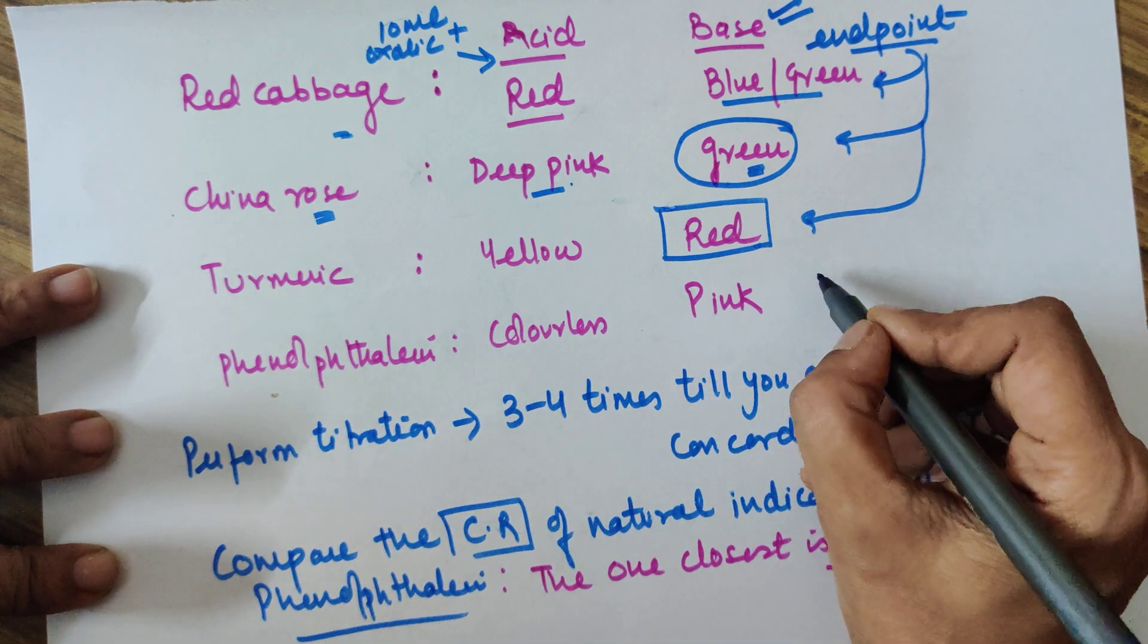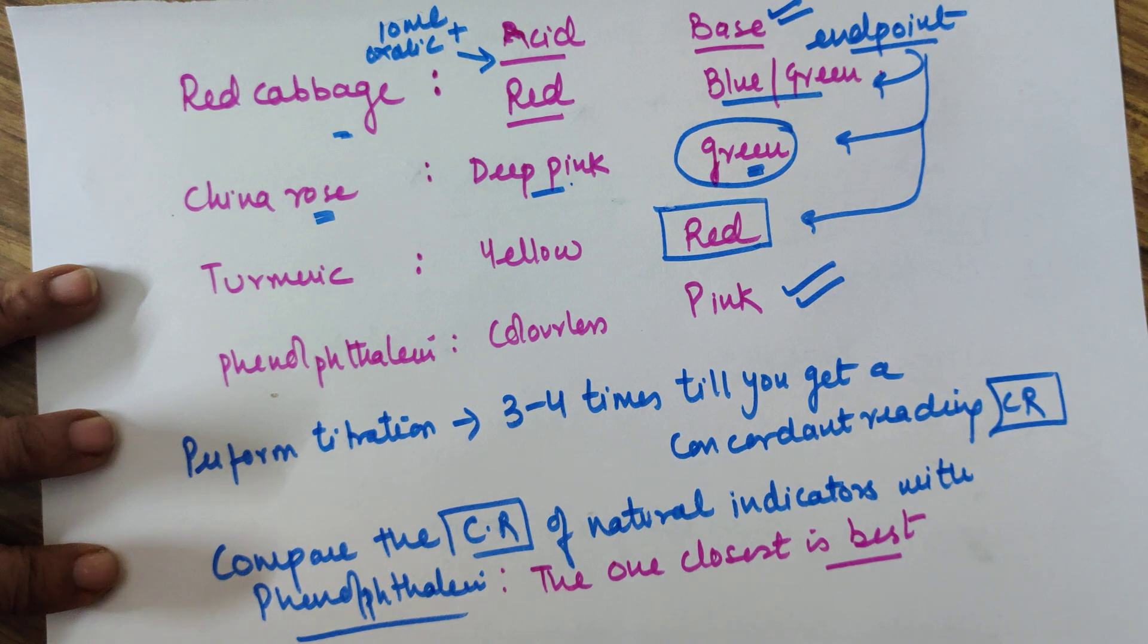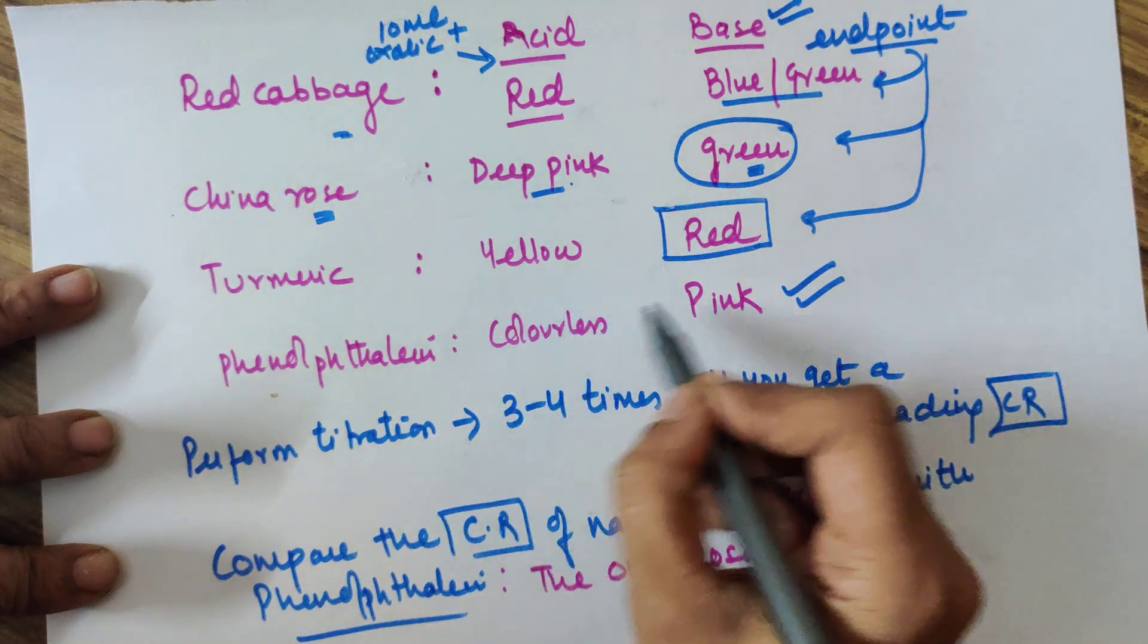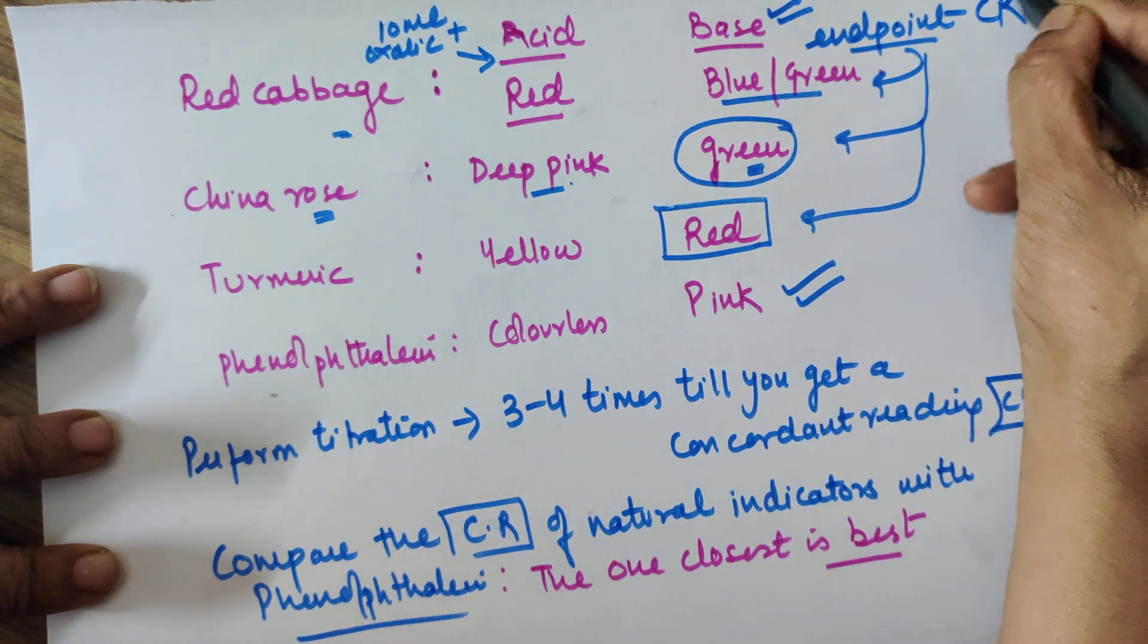As you very well know, this has been already done in Class 11th. If you use phenolphthalein, the color change is going to be from colorless to pink. Now for each of them, please note down the concordant reading.